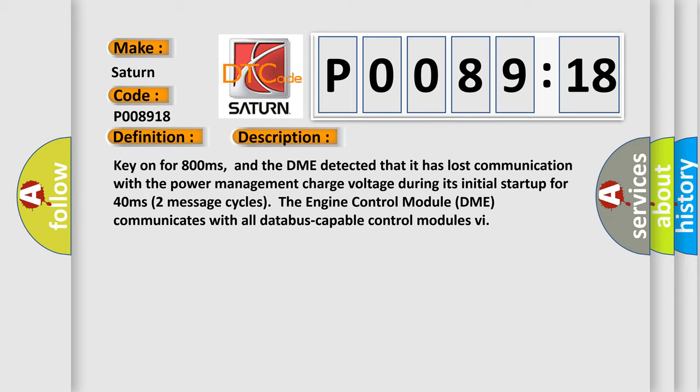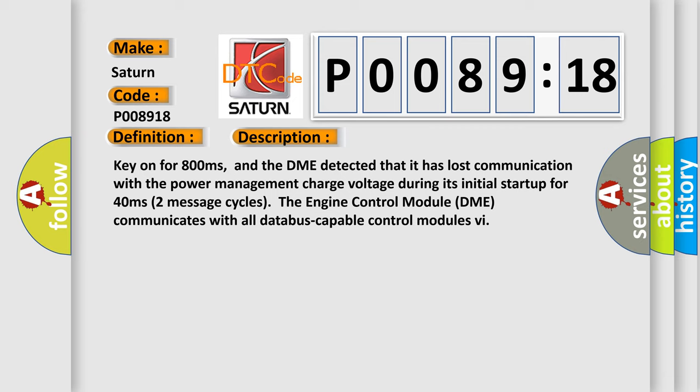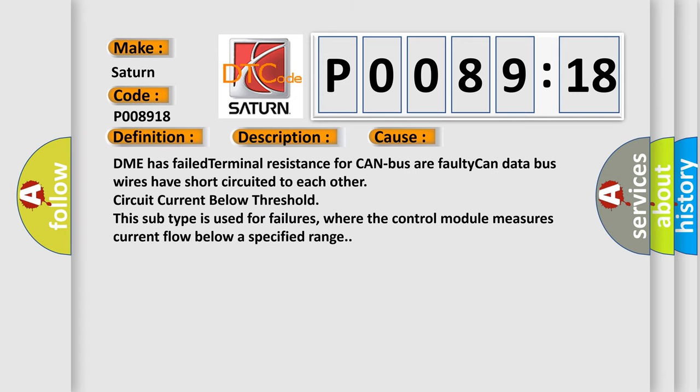The engine control module DME communicates with all database capable control modules. This diagnostic error occurs most often in these cases: DME has failed terminal resistance for CAN bus, faulty CAN data bus wires have short-circuited to each other, circuit current below threshold. This subtype is used for failures where the control module measures current flow below a specified range.